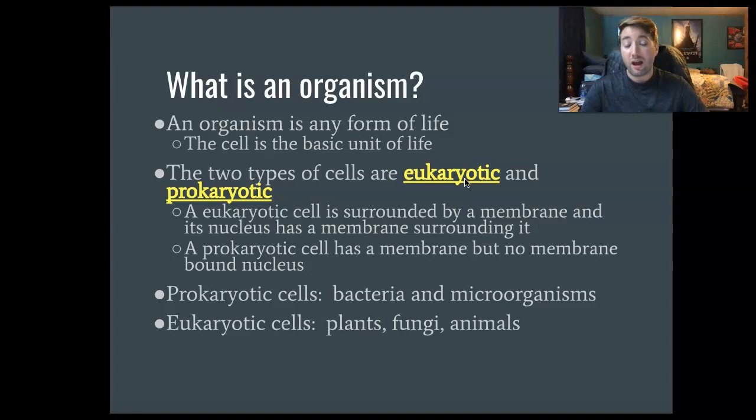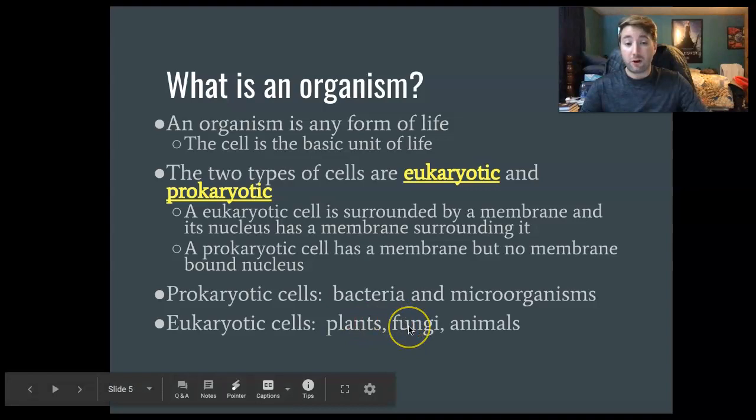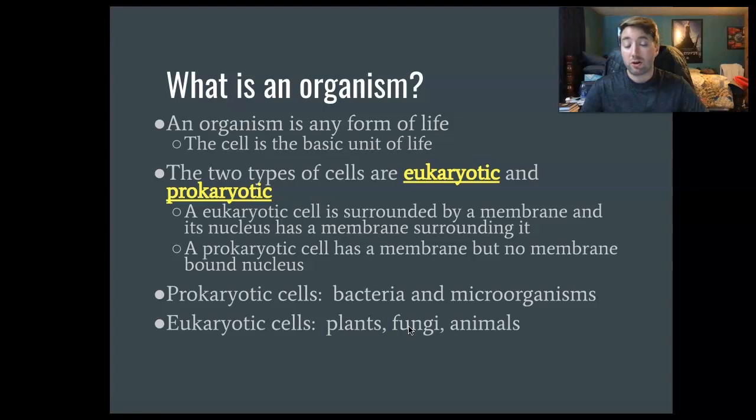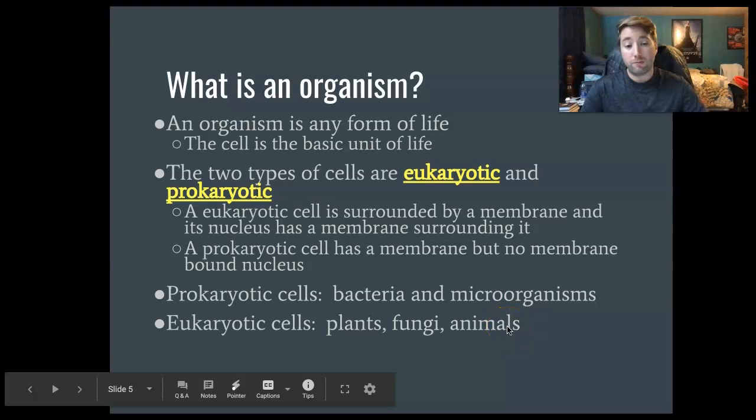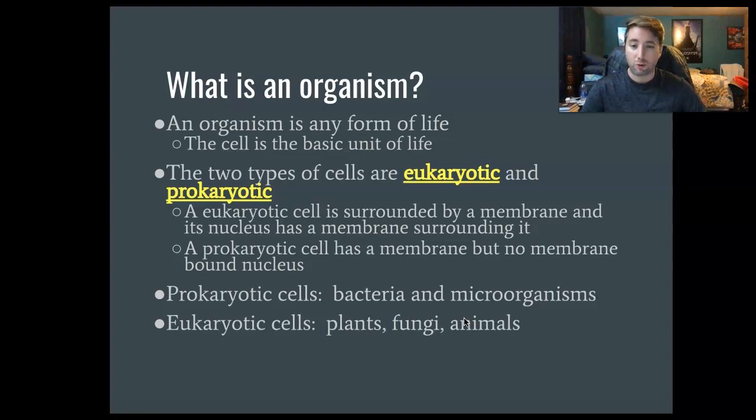Plants and fungi both have a cell wall. In plants, the cell wall is made out of cellulose, but in fungi it can be made out of different things — sometimes chitin, sometimes other materials. Animals do not have a cell wall; they just have a membrane that separates them from the outside world.